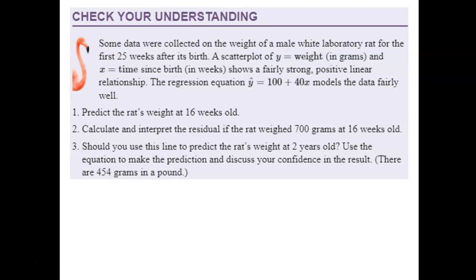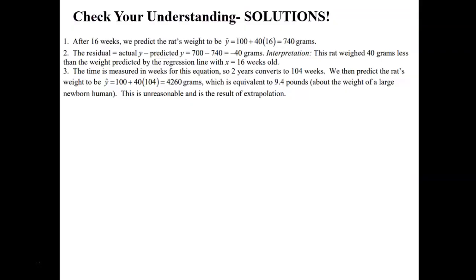Should we use the line to predict the rat's weight at two years old? Age is measured in weeks, so two years equals 104 weeks. According to our model we'd predict the rat weighs 4,260 grams — that's 9.4 pounds, which is like a big baby. This is an unreasonable result if we extrapolate that far out. I'm pretty sure I don't have rats that are 10 pounds. Anyone who knows about rats, let me know!